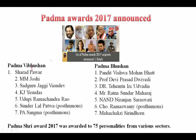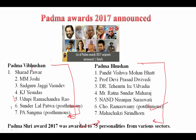Padma Awards 2017 announced: Padma Vibhushan was given to seven persons, Padma Bhushan was also given to seven persons, and Padma Shri was awarded to 75 personalities from various sectors. You need to remember there are two persons from the Padma Vibhushan category who got this posthumously, and there is one person Ramaswamy in that category.